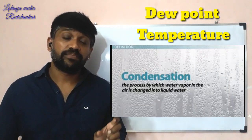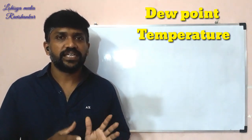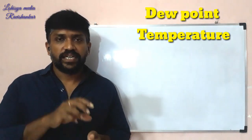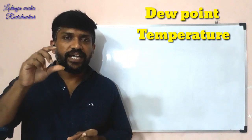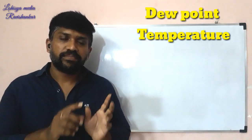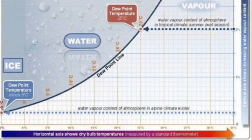The dew point temperature changes with temperature and pressure. When you analyze the psychrometric chart, if you analyze the dew point temperature, wet bulb temperature, and dry bulb temperature — water will change with temperature and pressure. When the air temperature reaches the dew point temperature, condensation occurs.